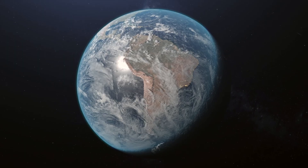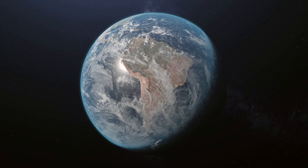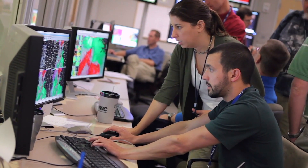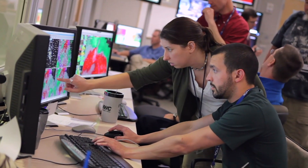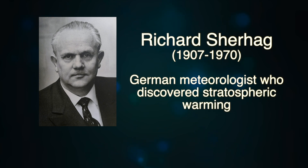Weather models cannot model the stratosphere with the same accuracy they can at the surface, so our ability to forecast these events is limited. Furthermore, the concept of stratospheric warming only came about in the 1950s, so we don't have a lot of data to work with either.